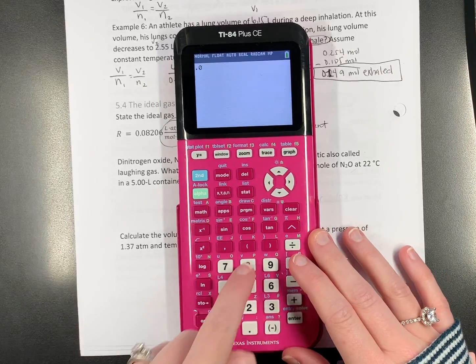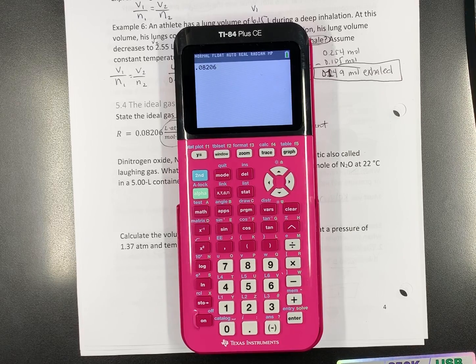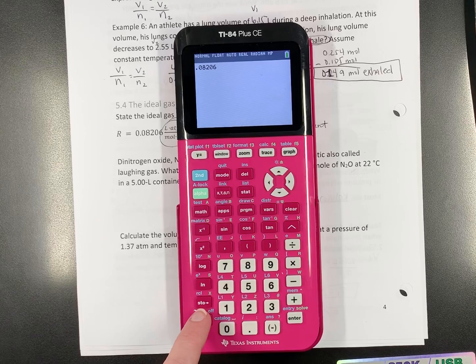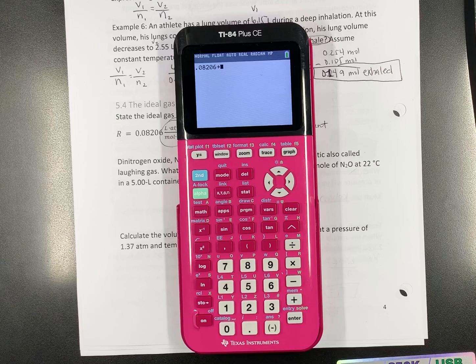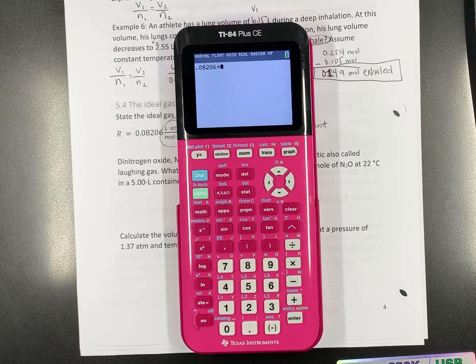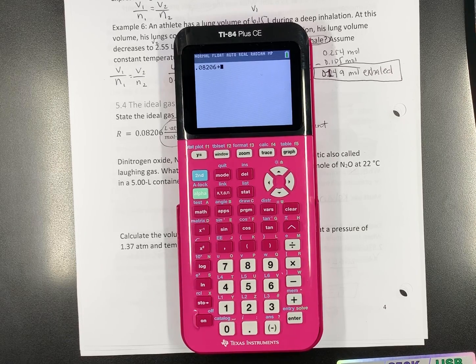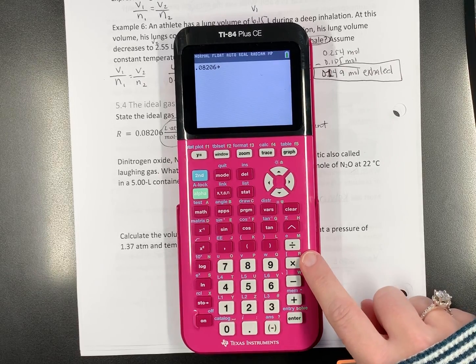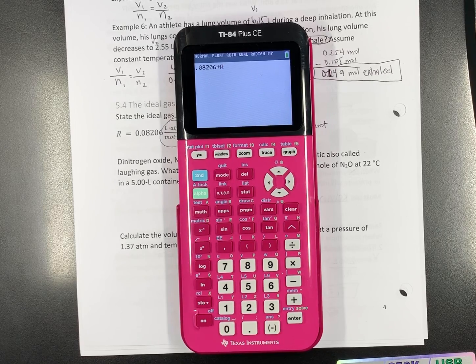Everybody type 0.08206 into your calculator. Now, hit the button right above the on where it says STO, right arrow. That means it's going to store it in your calculator's memory, and we're going to pick a letter. Since it's the ideal gas constant R, why don't we store it as R? So, hit the alpha button and find R, which is above the time. Does everybody have that? Hit enter.